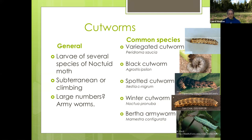Each of these can be a problem in different crops. The spotted cutworm and the bertha armyworm are two of the biggest pests in small fruit like raspberries and also orchards. There's another common cutworm I'm not showing here that can sometimes be a problem.